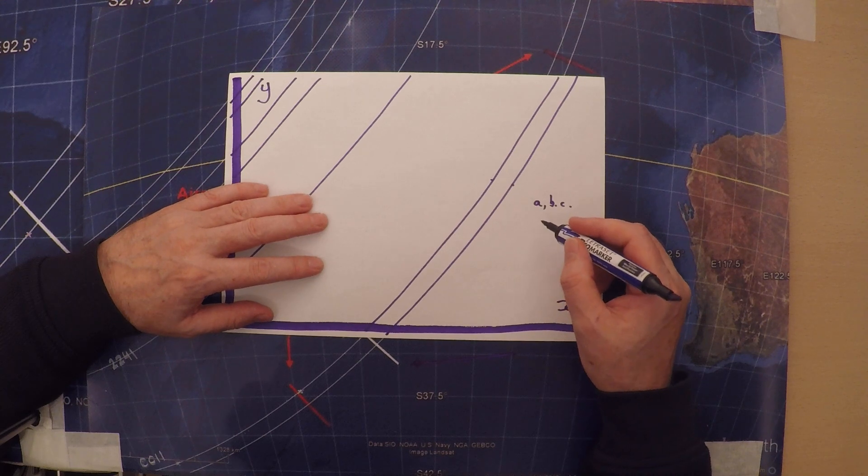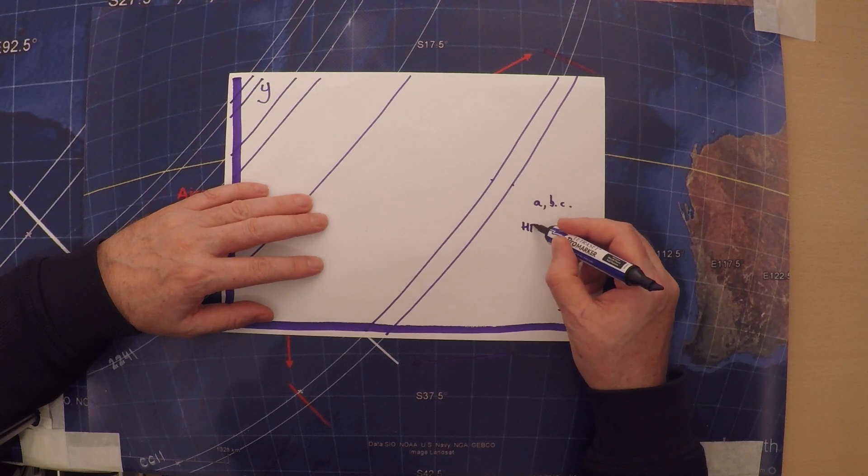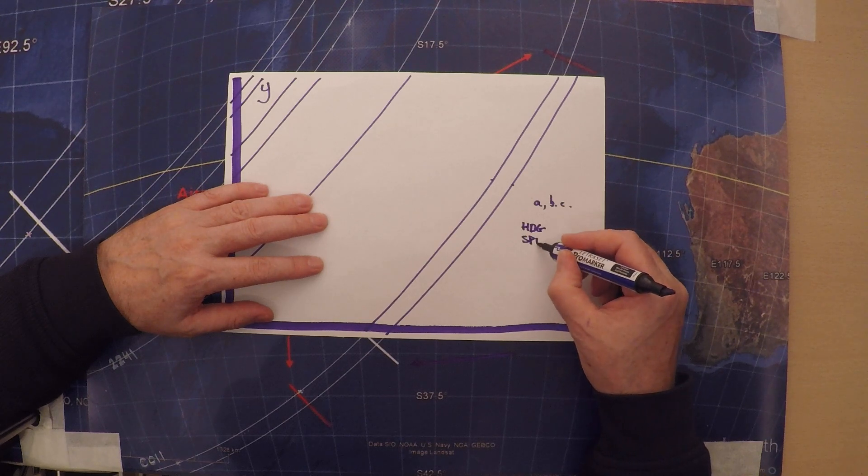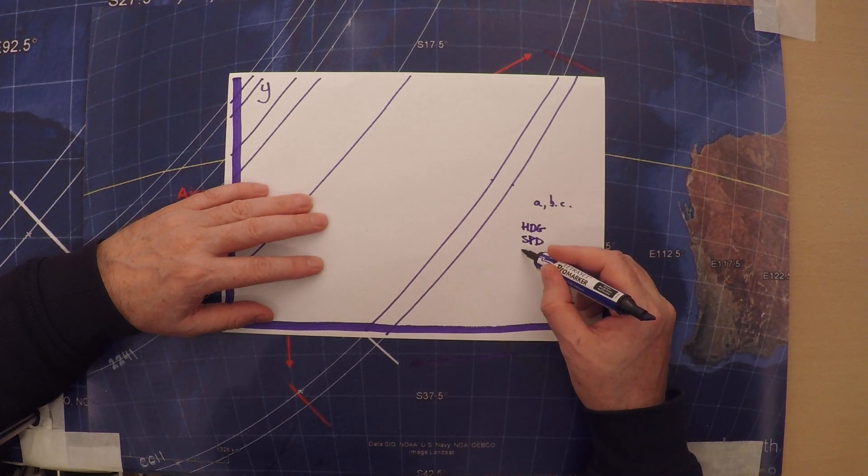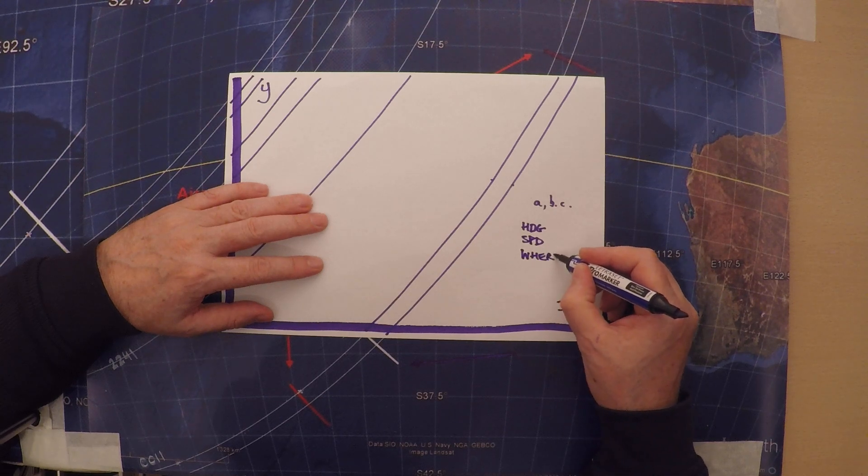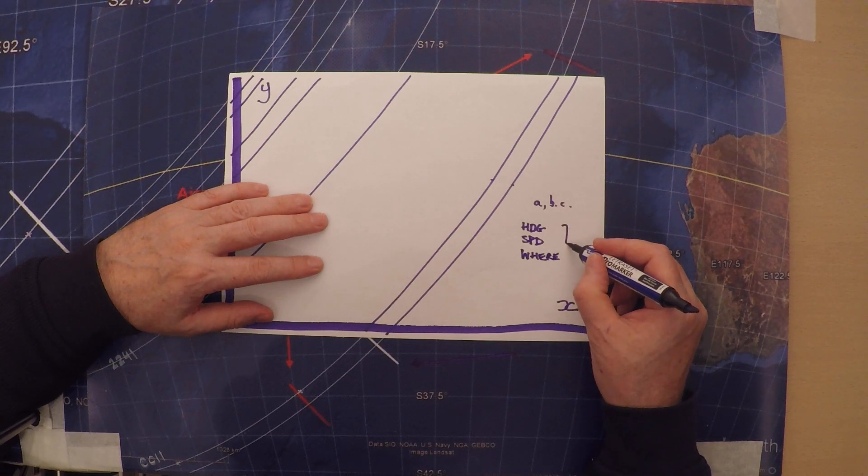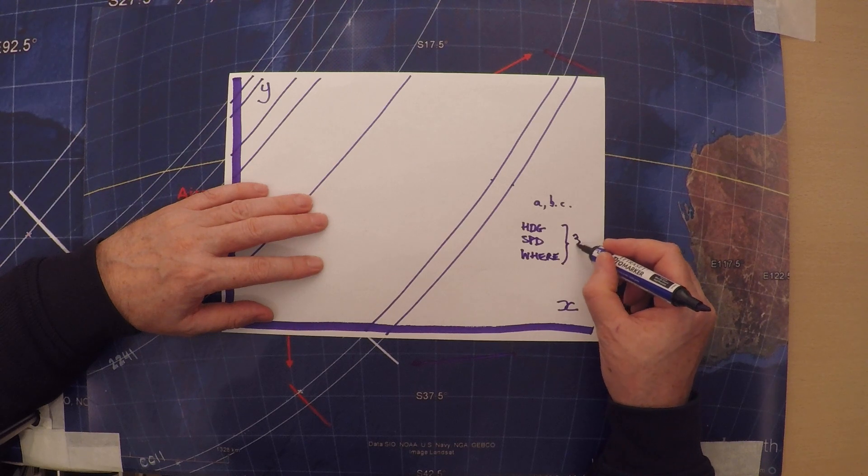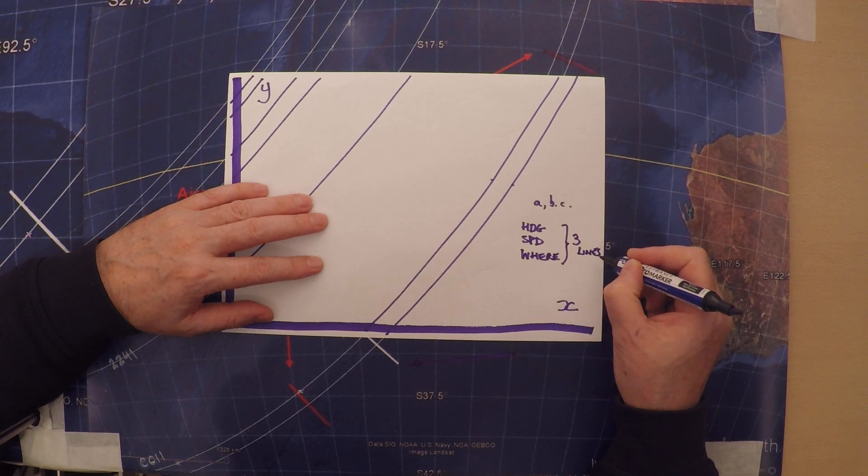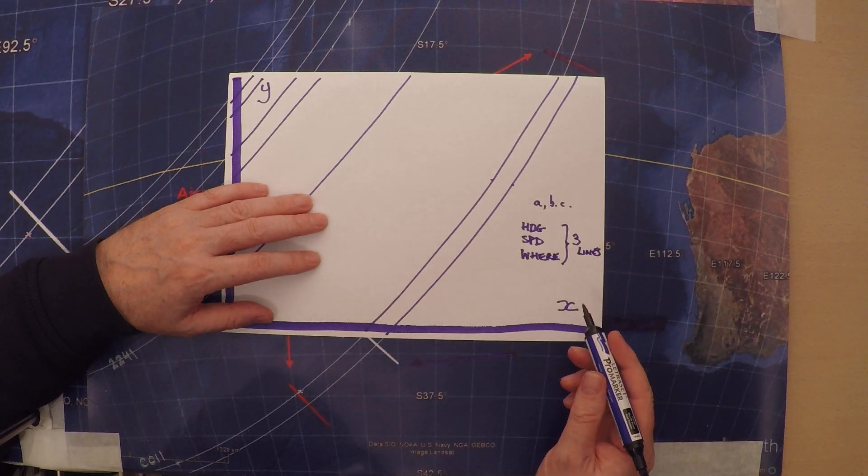In this case, we'd like to find out the heading of the aircraft, the speed of the aircraft, and we'd also like to find out where this was taking place. That seems to be three unknowns. That must mean that if we took three lines, or arcs, we could find the information.